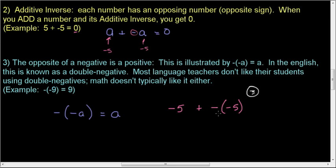According to property 3, this thing here is actually the opposite of negative 5, which is just positive 5. And so negative 5 plus 5 is 0.